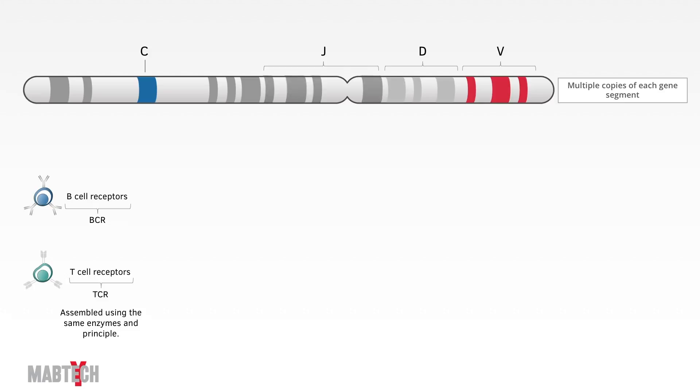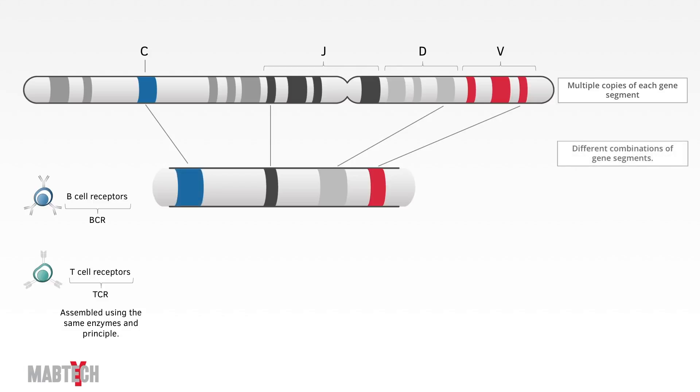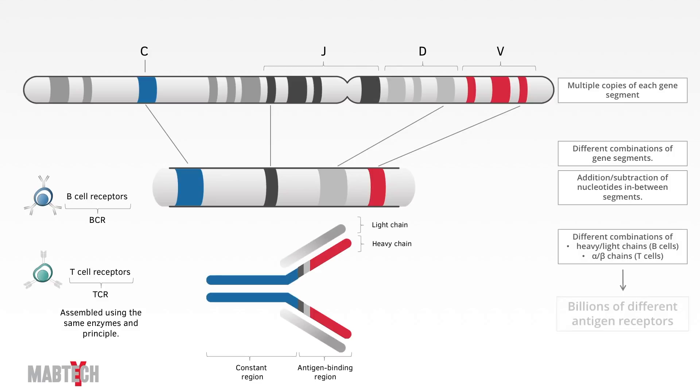Well, first of all, each of the three or four gene segments that together encode the final antigen receptor exists in multiple copies. These copies differ from one another slightly, and only one is chosen for the final receptor. Second, when the three or four gene segments making up a chain are put together, some nucleotides can be added or subtracted from the sequence in between the segments. Finally, different heavy and light chains, or alpha and beta chains in the case of T-cells, are combined to form the fully assembled antigen receptor.